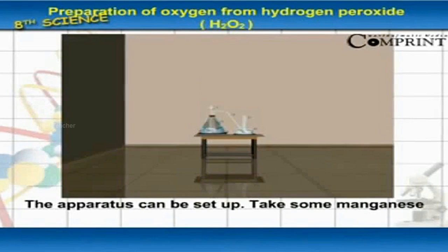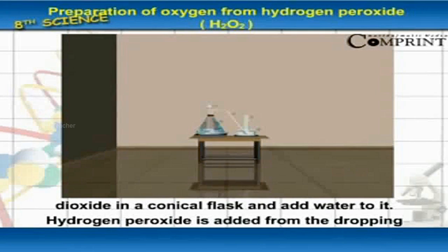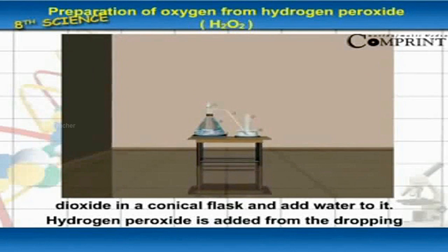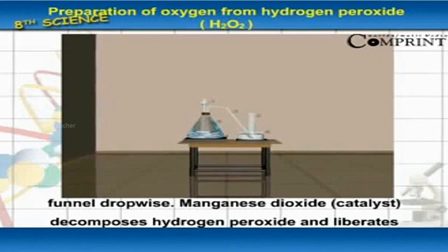The apparatus can be set up. Take some manganese dioxide in a conical flask and add water to it. Hydrogen peroxide is added from the dropping funnel dropwise.